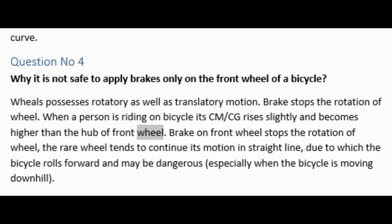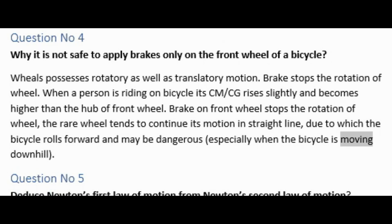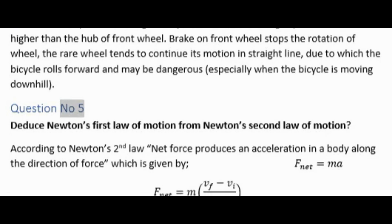Brake on front wheel stops the rotation of wheel. The rear wheel tends to continue its motion in straight line, due to which the bicycle rolls forward and may be dangerous, especially when the bicycle is moving downhill.